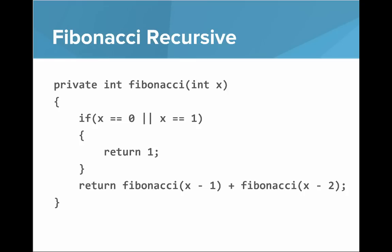So here's putting them together. What does that method look like? There you go, you can see private int Fibonacci int x, if x is 0 or x is 1 return 1. Otherwise return Fibonacci of x minus 1 plus Fibonacci of x minus 2.